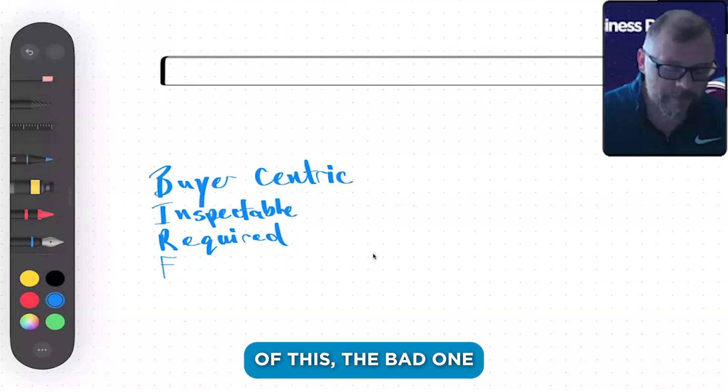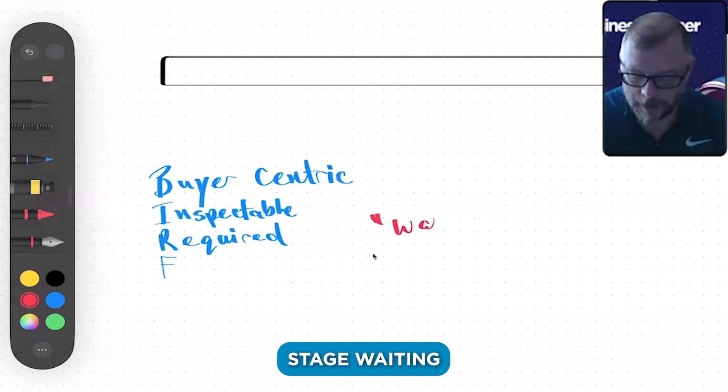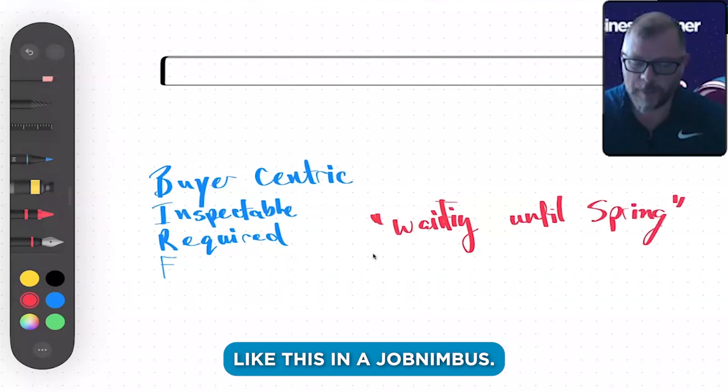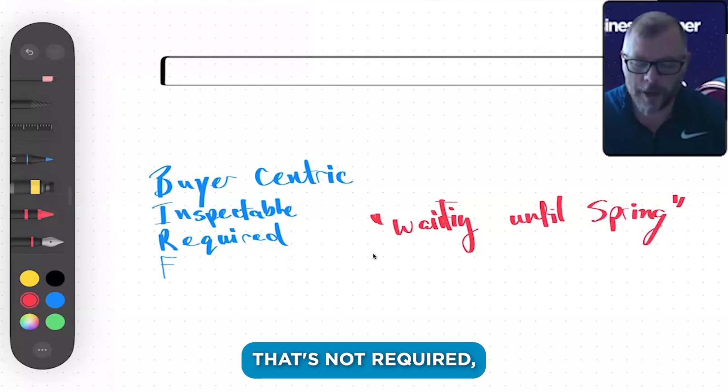The common culprit of this, the bad one, is 'deal waiting until spring.' A lot of people create a bucket like this in Job Nimbus when we migrate data. The problem is that's not required. It's buyer-centric, it's what the customer is experiencing.